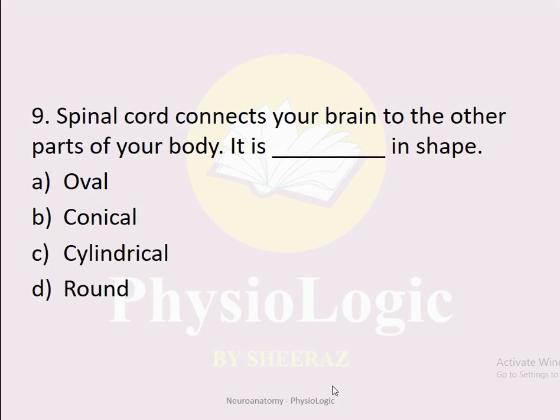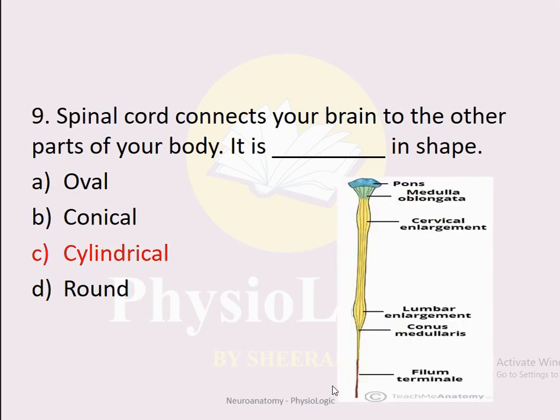You must remember that there are seven cervical vertebrae, but the number of nerves coming out of that segment is eight — so seven cervical vertebrae but eight cervical nerves. MCQ number nine: The spinal cord is dash in shape. Option A: oval. Option B: conical. Option C: cylindrical. Option D: round. The correct option is C: cylindrical.